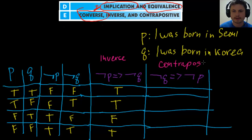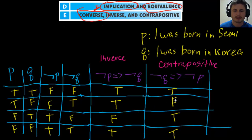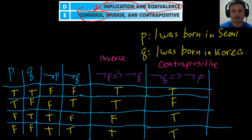Contrapositive is the opposite where the two values are flipped. The contrapositive truth table comes out as: true, false, true, true. If you notice, this looks very familiar — it's actually similar to the implication table, and the inverse is similar to the converse.